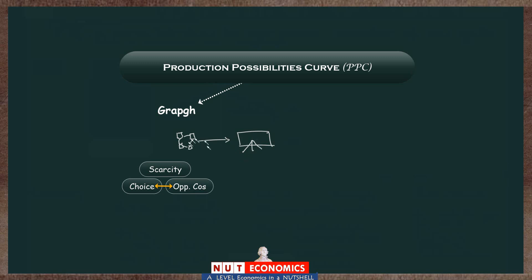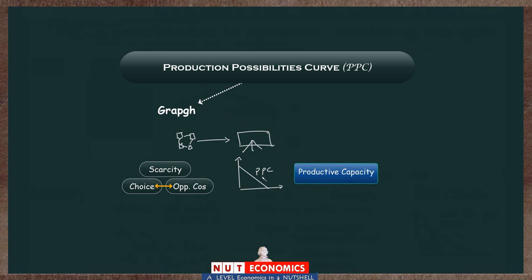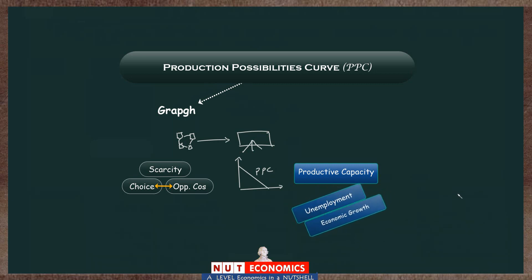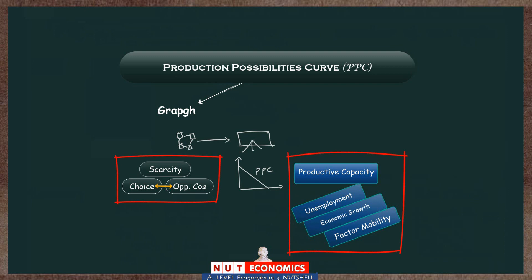The picture created by stitching these ideas together looks like a two-dimensional graph with a downward sloping line, known as a PPC. On the face of it, the most visible economic idea it shows us is the productive capacity of a country. But within the details of this graph, we can also make inferences about economic ideas of unemployment, economic growth, and perfect versus imperfect factor mobility. These are exactly what we want to understand by the end of this video.